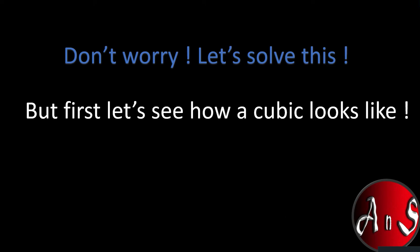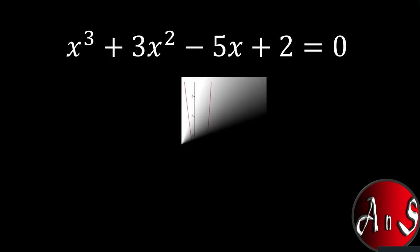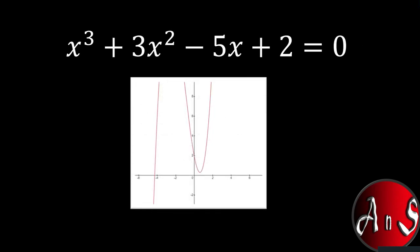We first need to show how a cubic looks like on the graph paper because that's necessary for intuition. So let's see on a graph paper how a cubic looks like. For example, our cubic looks like this. As you can see, the cubic goes from up and down and goes up and down like that.